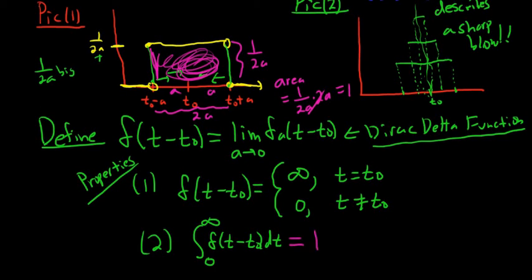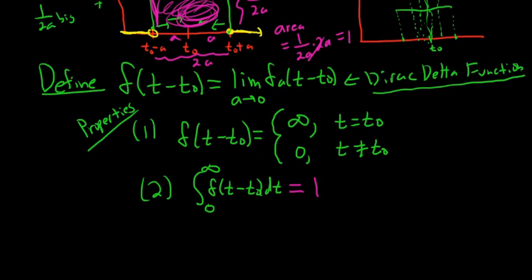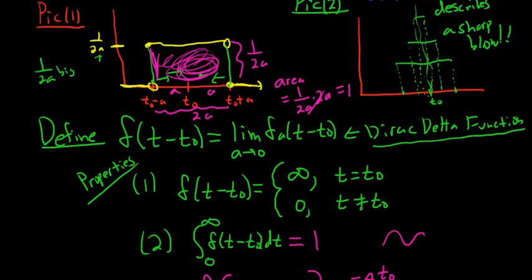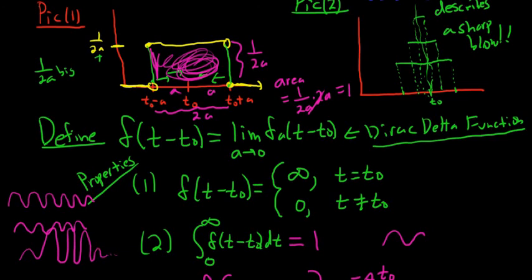The key result used is that the Laplace transform of the Dirac delta function — delta of t minus t₀ — is simply e to the negative s t₀. You'll have differential equations, like an oscillating spring just going along, and all of a sudden a sharp blow hits the spring so the oscillation pattern changes. Dirac delta is used to model sharp blows like that.